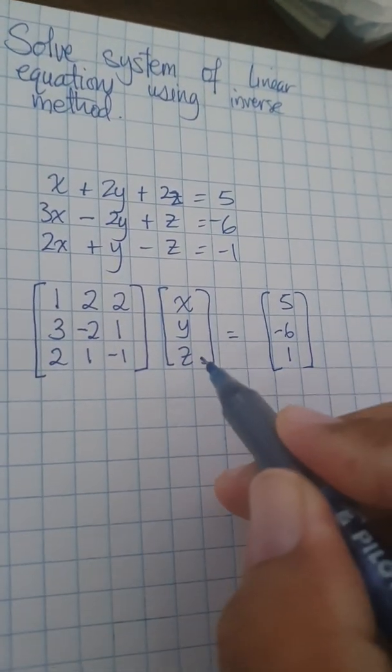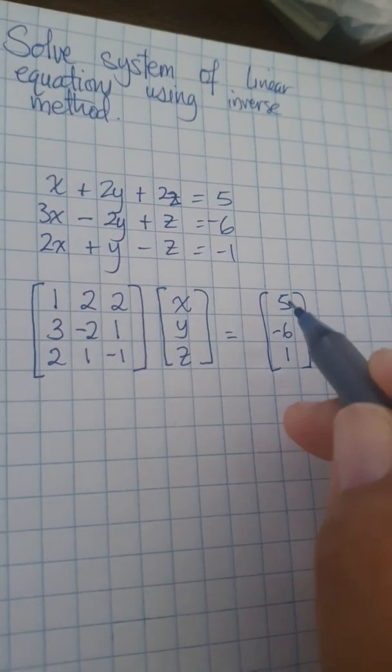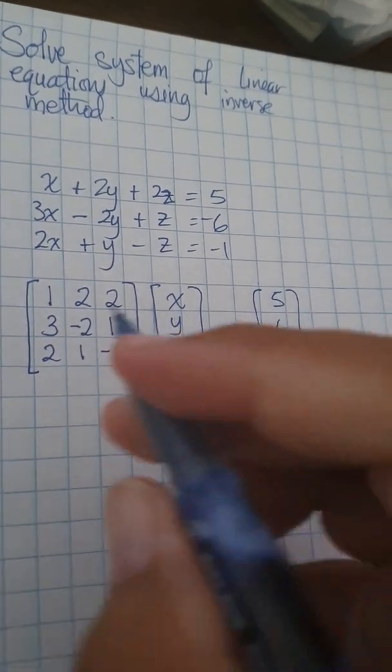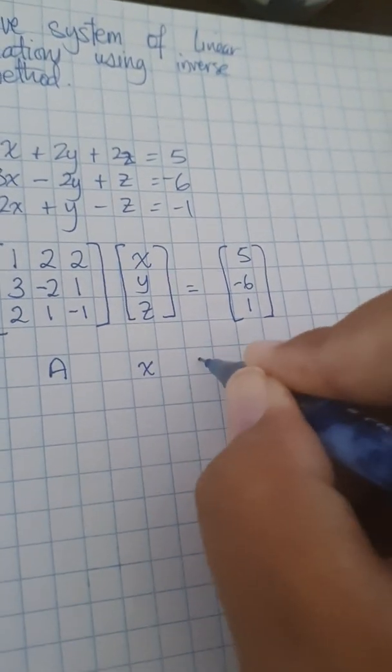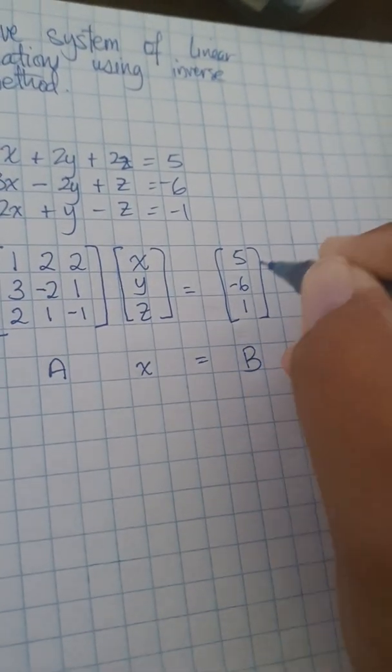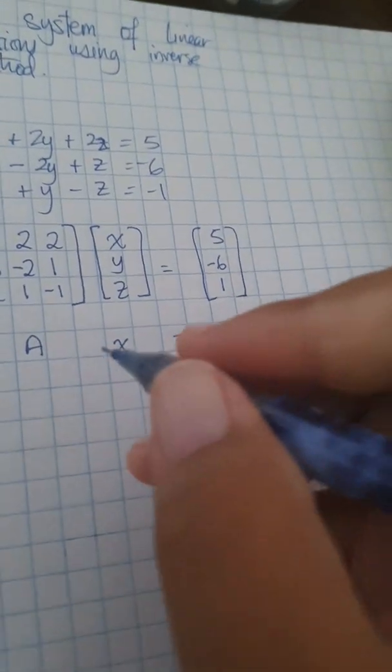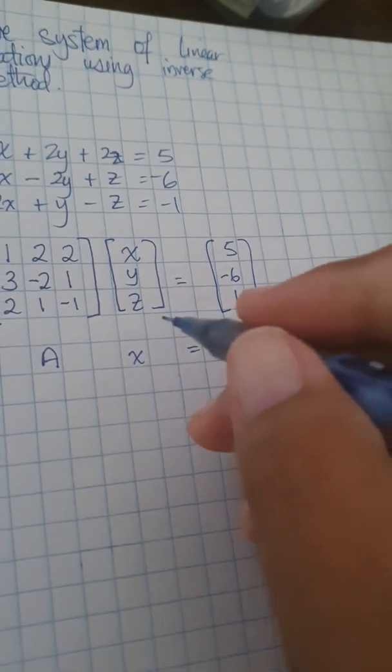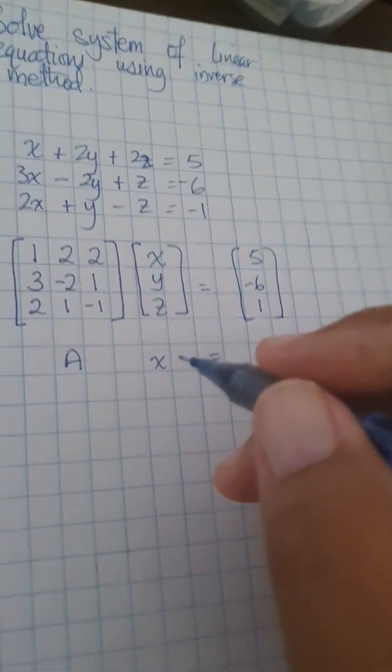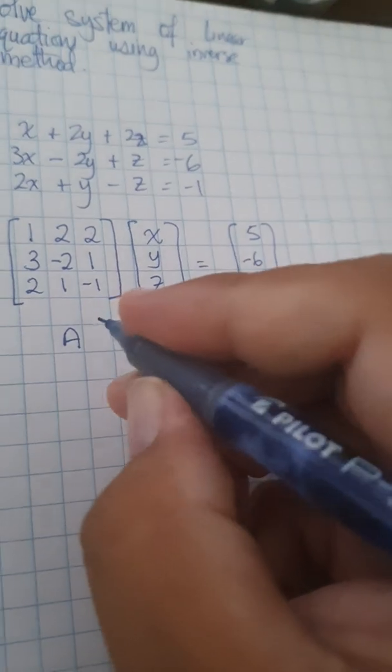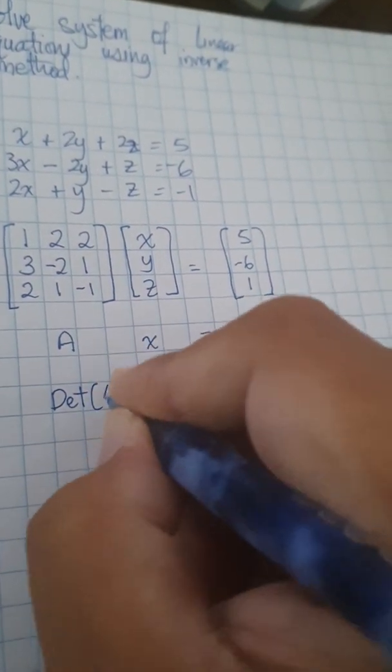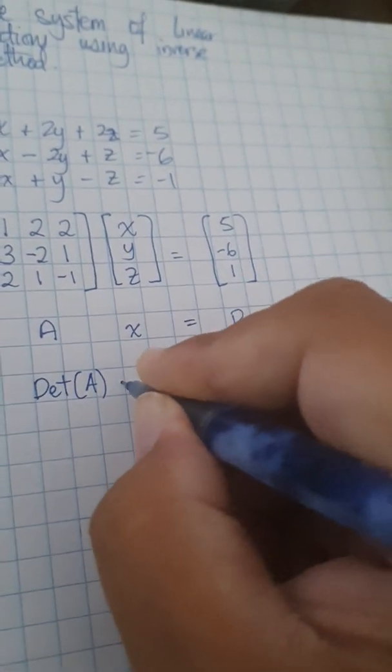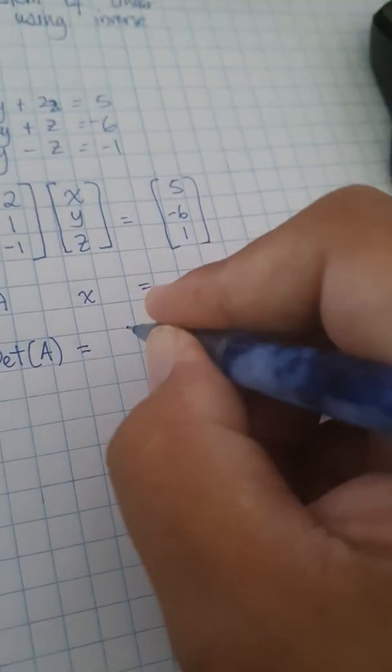here your variables and your constants matrix of constants. So this form is called matrix A times X equals B. This is matrix B. So we're going to work on A to find the determinant of A, the cofactors and the minors. Okay, first of all, let's do the determinant.